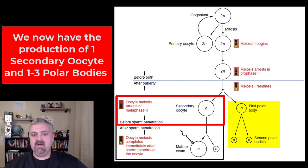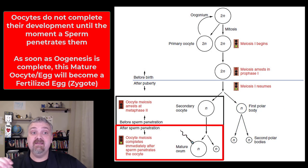This process began before birth and then it picked back up at puberty, but it doesn't actually finish until sperm penetrates this oocyte. This cell is stuck there at metaphase 2 before sperm penetration. Once sperm penetrates the egg, the oocyte will finish oocyte production and complete meiosis. For an instant it will be this functional oocyte, but then it's going to fuse with that sperm and become a zygote.